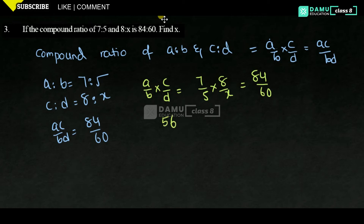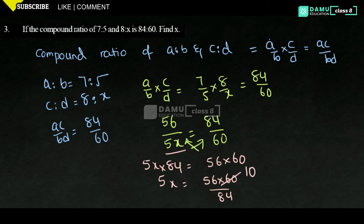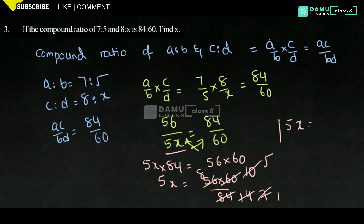So 56 by 5X equals 84 by 60. Cross multiplying: 5X into 84 equals 56 into 60. Then 5X equals 56 into 60 by 84. Simplifying, 5X equals 8 into 5. So X equals 8 into 5 by 5 — the 5s cancel — and X equals 8. That is the answer.